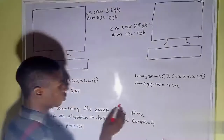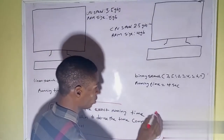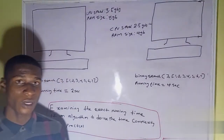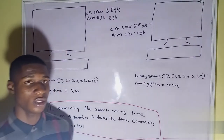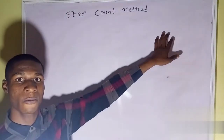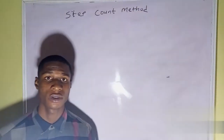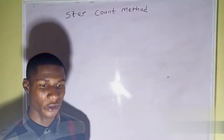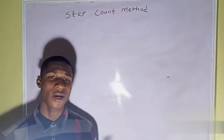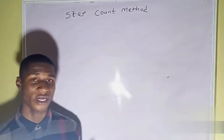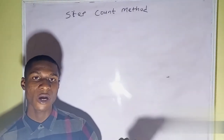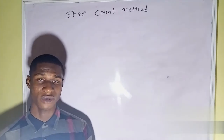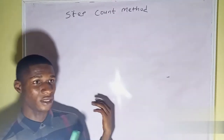Examining the exact running time of an algorithm to derive the time complexity is not practical, so this method should not be used. The other way to derive the time complexity of an algorithm is called the step count method. The step count method is the best way to derive the time complexity. Rather than calculating the exact running time, we count the number of instructions executed based on the input size, and with that we derive the time complexity.